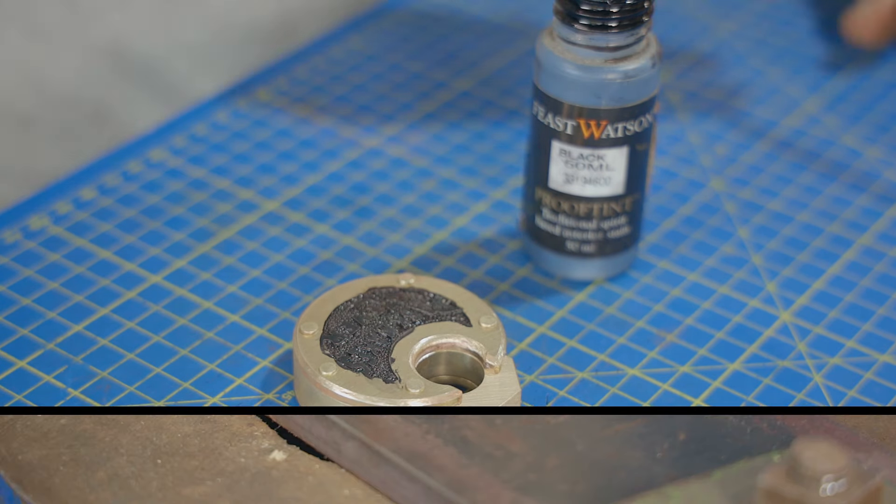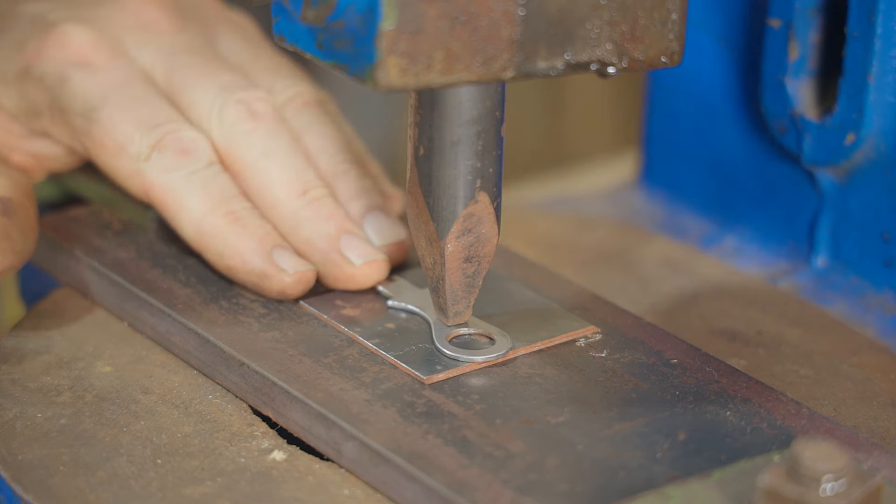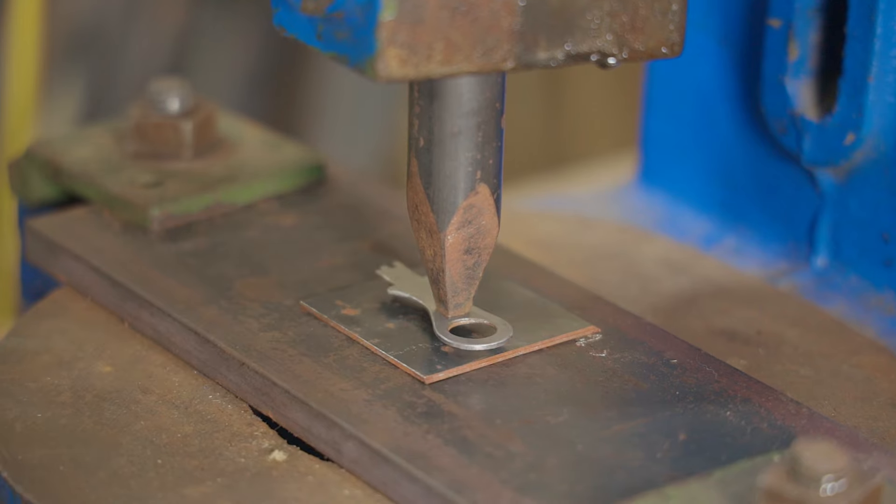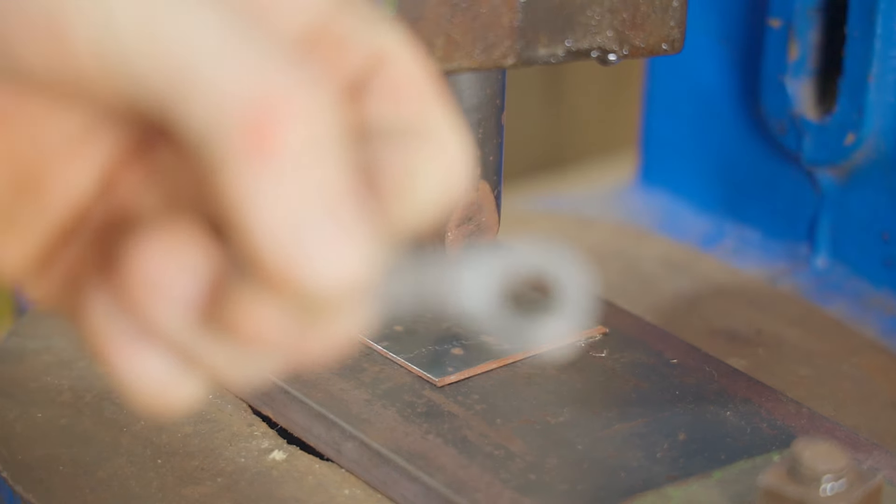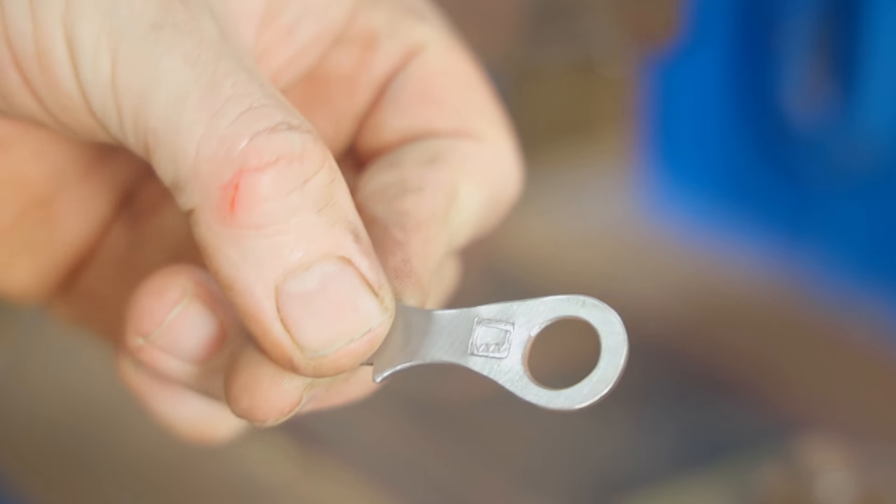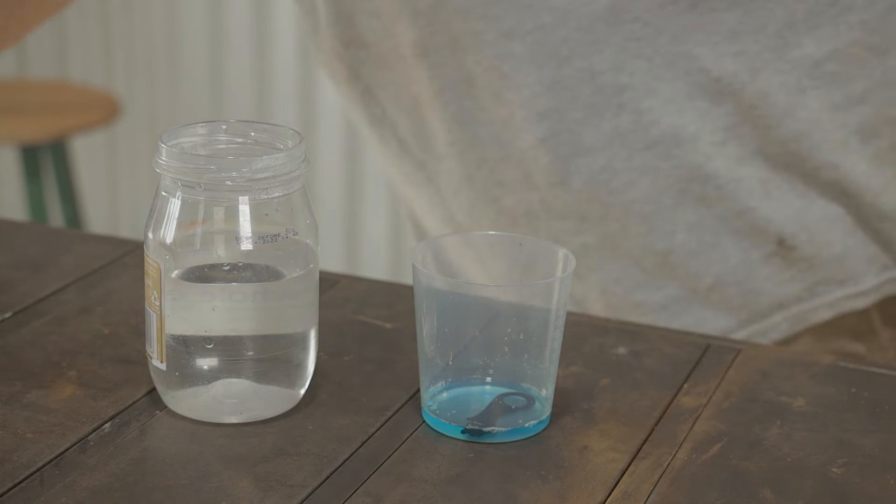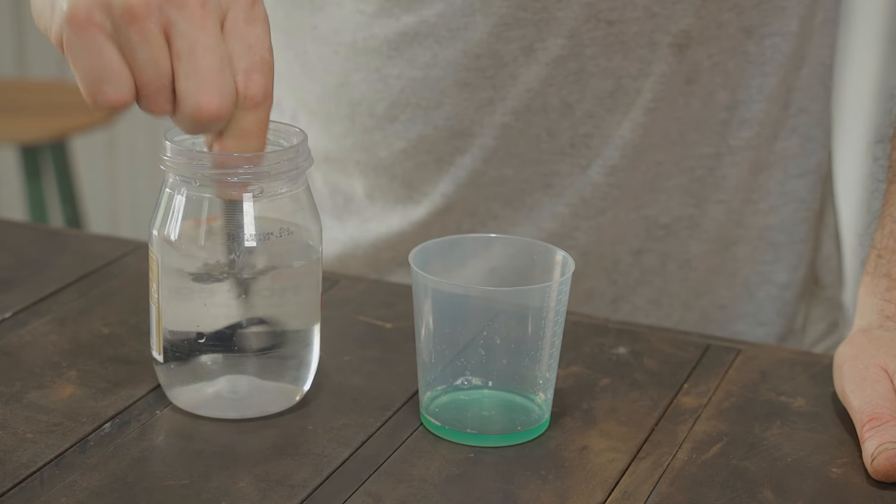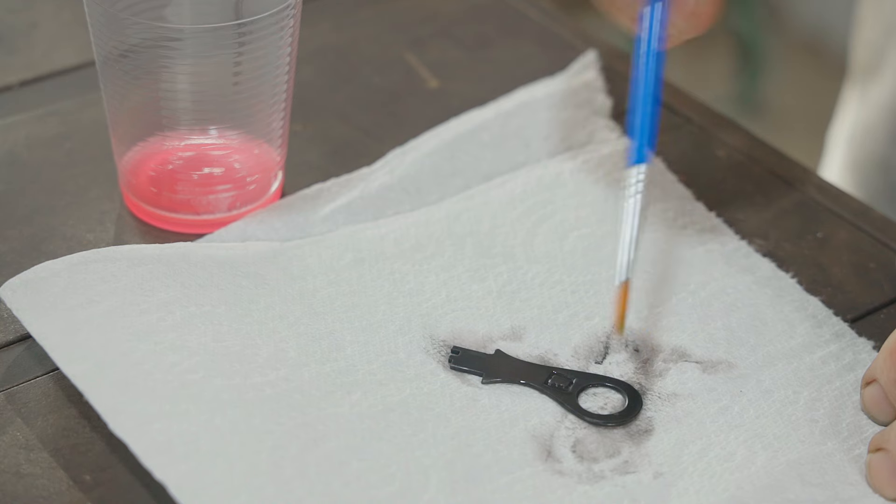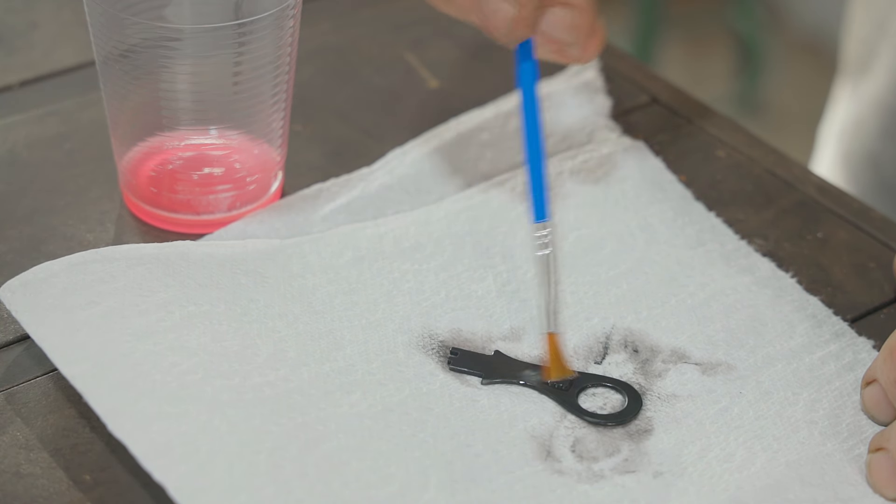While that's drying I'll stamp my logo into the key and I'll do that with my fly press. The key being mild steel will rust so I'll try and prevent that by blackening it with super blue. After it's been blackened it needs oiling and I've been told that water-soluble cutting fluid does a great job so I'm trying that.